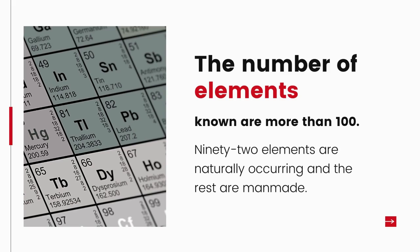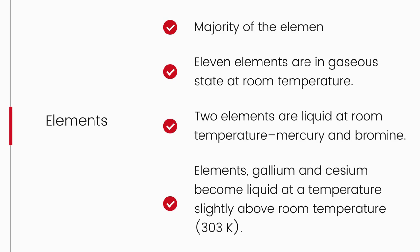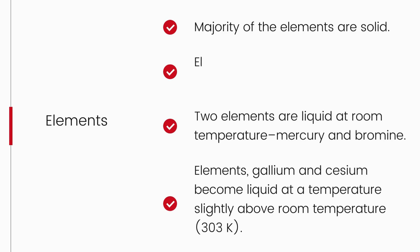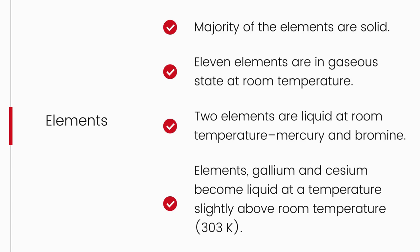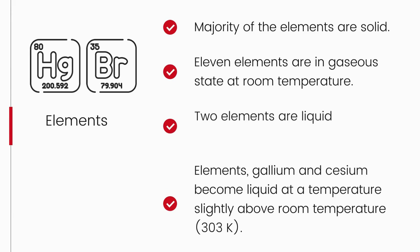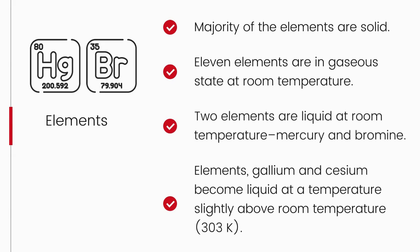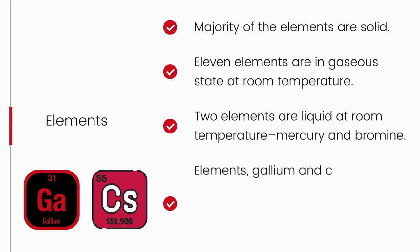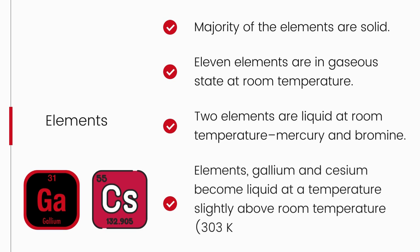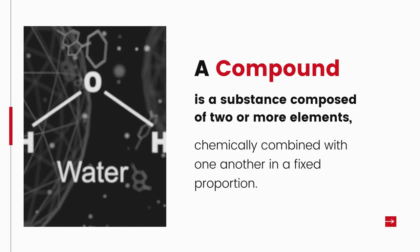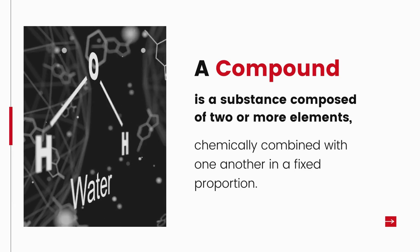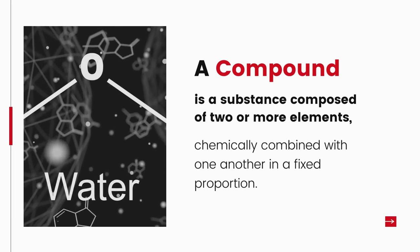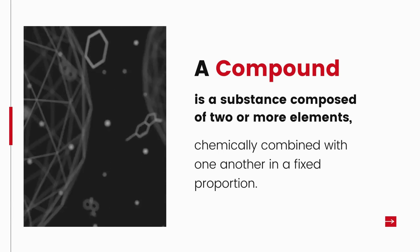Non-metals display a variety of colors, are poor conductors of heat and electricity, and are not lustrous, sonorous, or malleable. Examples: hydrogen, oxygen, iodine, carbon, bromine, chlorine. Some elements have intermediate properties between metals and non-metals — they are called metalloids, like boron, silicon, and germanium. More than 100 elements are known; 92 occur naturally and the rest are man-made. The majority are solid; 11 elements are in gaseous state at room temperature; two are liquid at room temperature — mercury and bromine. Gallium and caesium become liquid slightly above room temperature. A compound is a substance composed of two or more elements chemically combined in a fixed proportion.